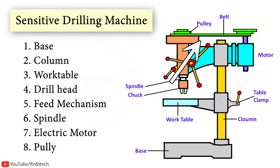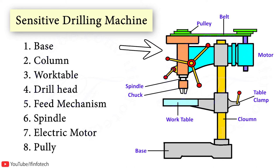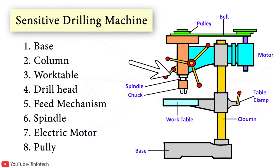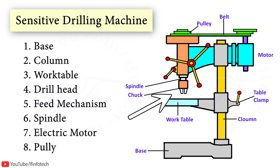A V-type belt is provided to transfer power from the motor to the pulley, and from the pulley the mechanical power is transferred to the drill head. In the feed mechanism, we use an electrical motor, V-belt, and pulley to transfer power from the motor to the spindle. The spindle is a circular taper shaft which helps to hold the drill chuck. The chuck is mounted on the lower end of the spindle and holds the drill jig. A keyhole is also provided to change the drill jigs.